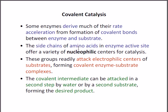Now we'll see the general machinery of how enzymes actually help to convert the substrate into product via catalytic activity. Most of the time, the side chains of amino acids in the enzyme active site offer a variety of nucleophilic centers for catalysis. These centers often consist of a hydroxyl group, where the oxygen contains a lone pair of electrons, acting as a nucleophile that attacks electrophilic centers of the substrate, forming a covalent enzyme-substrate complex.